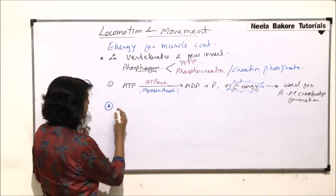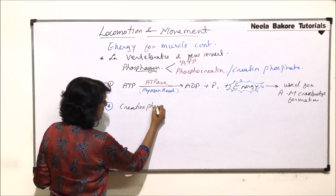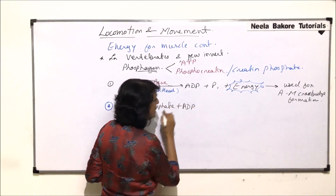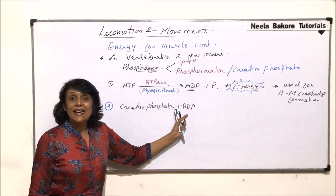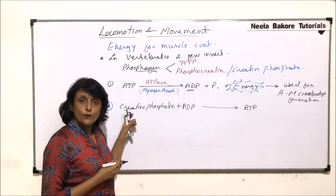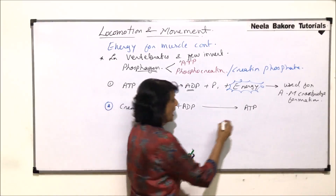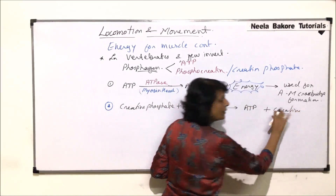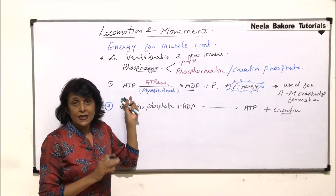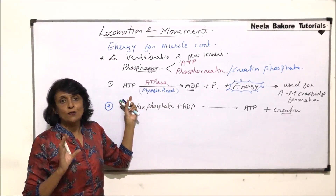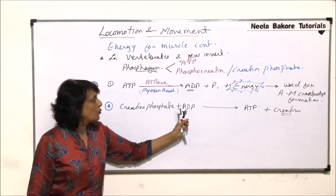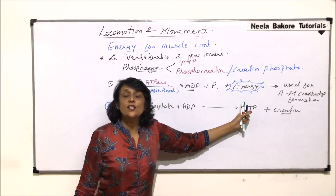The second reaction is generation of ATP, and this is where the second phosphagen — creatine phosphate — plays its role. Creatine phosphate reacts with ADP, giving its phosphate and energy to ADP. The ADP generated in the first step is used up here, ATP gets synthesized, and the creatine molecule is set free. So when ATP is exhausted, creatine phosphate immediately gives its phosphate to ADP to regenerate ATP, maintaining a continuous supply for muscle contraction.